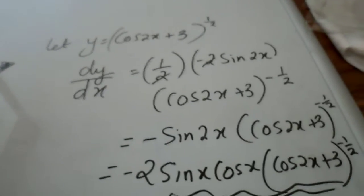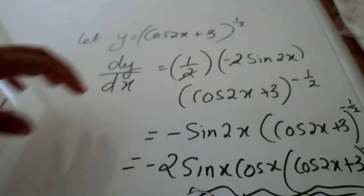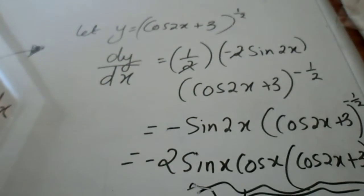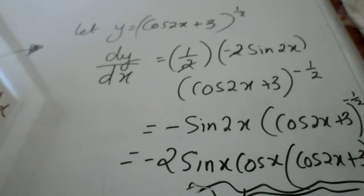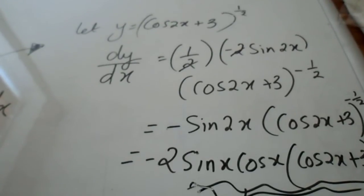The answer after cleaning this up the constants up is equal to minus sin 2x cos 2x plus 3 to the power of minus half.